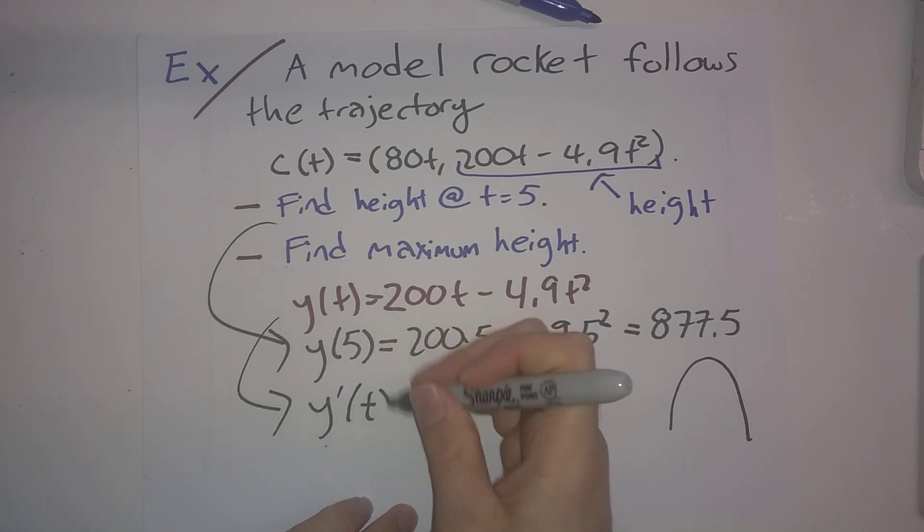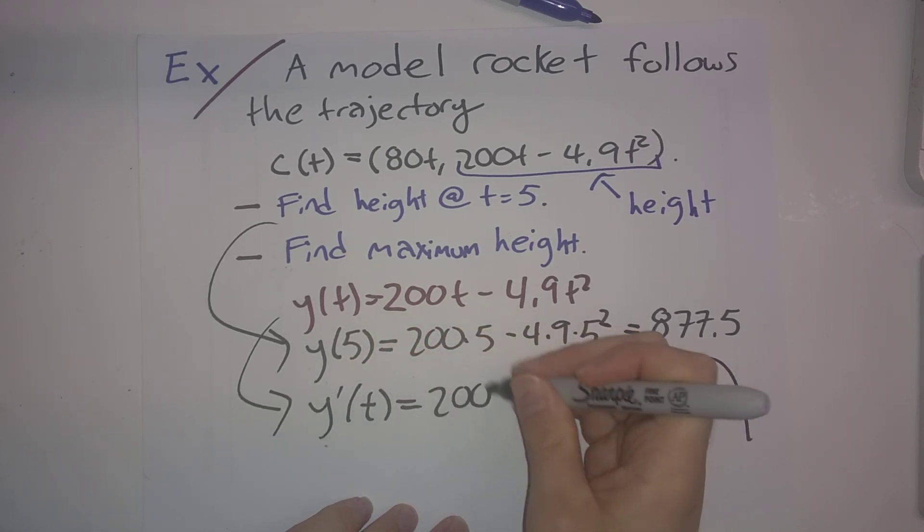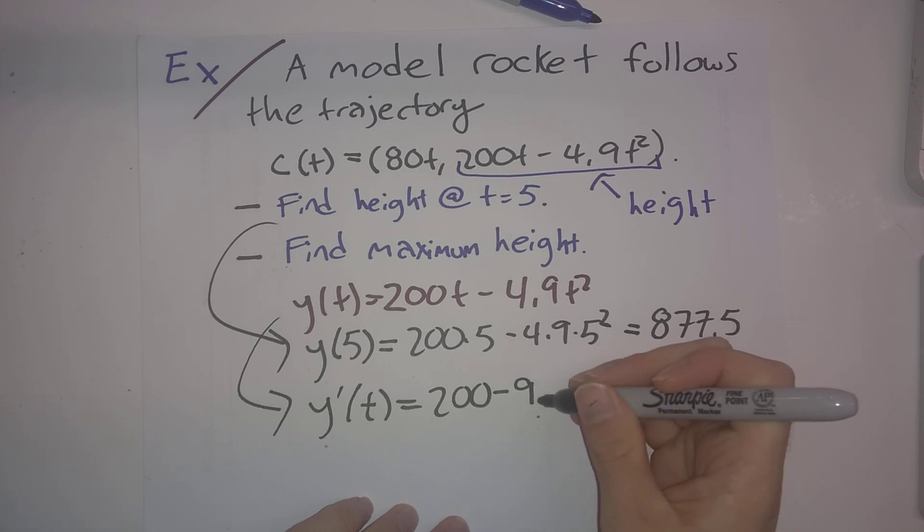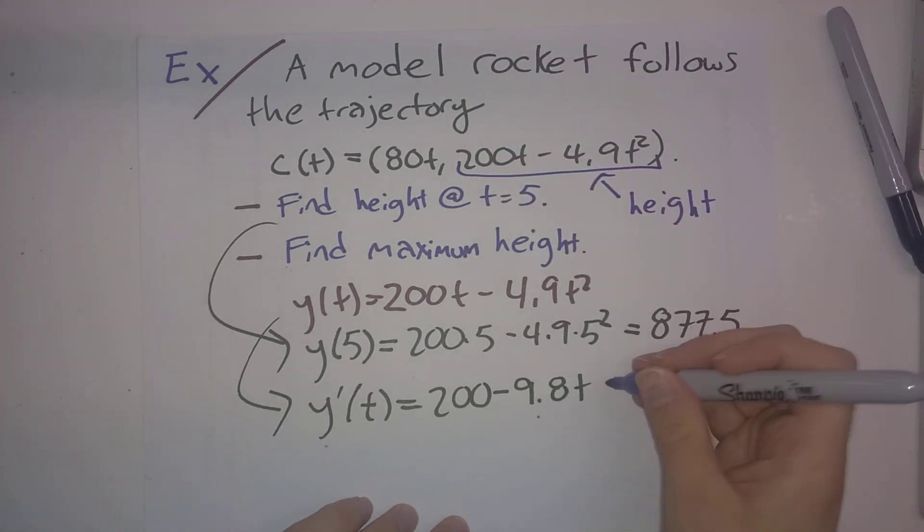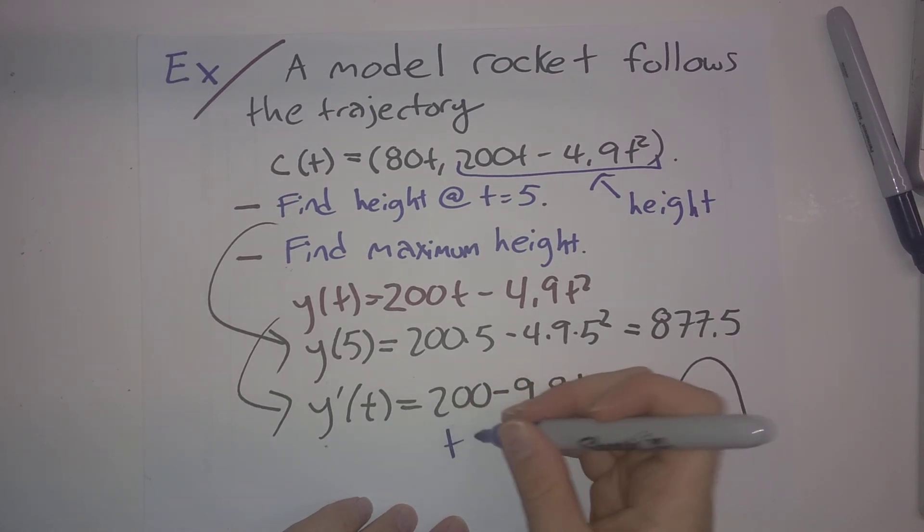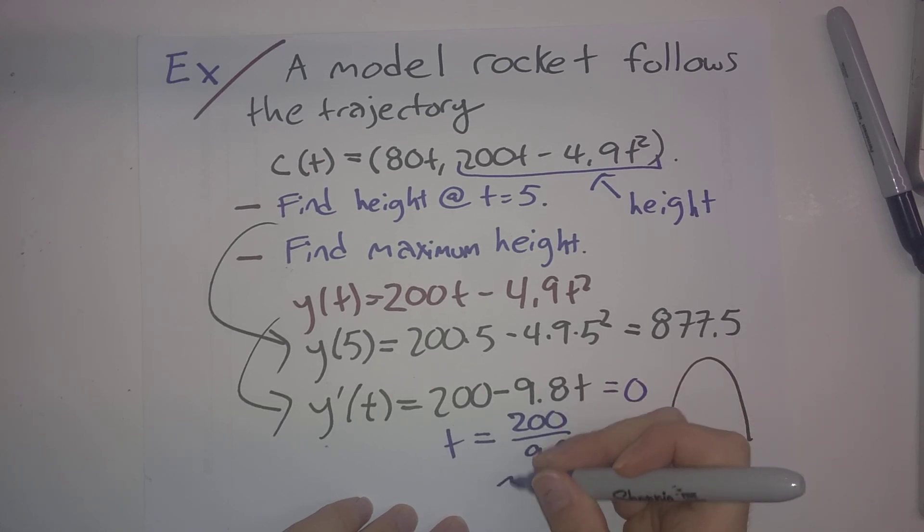So y'(t) = 200 - 9.8t. We want to set this equal to 0 and solve. And crunching this out, t = 200/9.8, which is about 20.4 seconds.